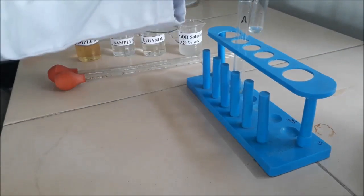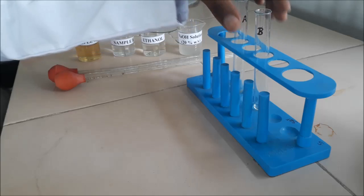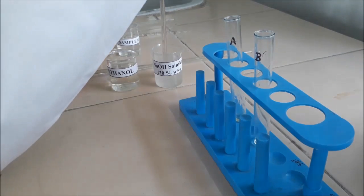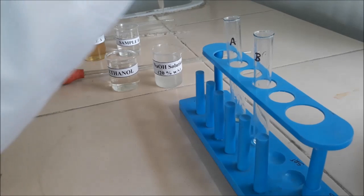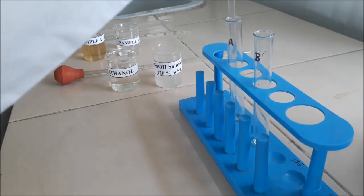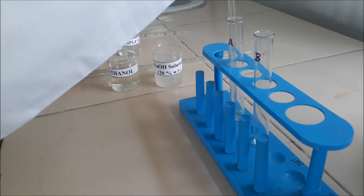Keep both the test tubes in the test tube stand. Now, pipette out 1 ml of annulus solution of concentration 20% weight by volume then transfer it into test tube A.